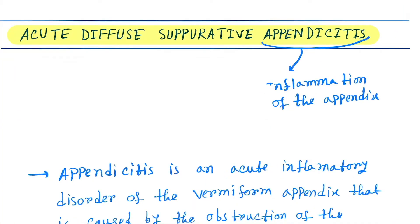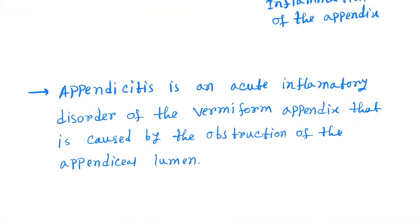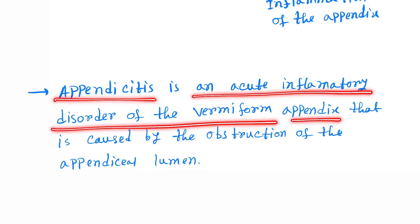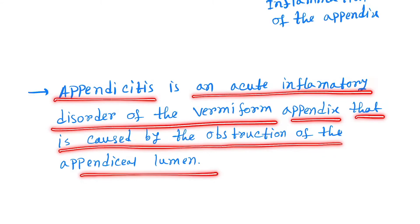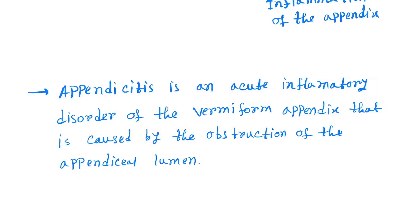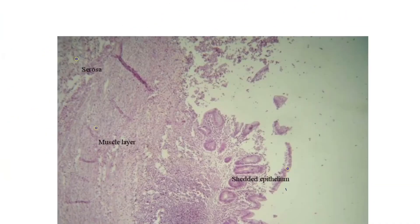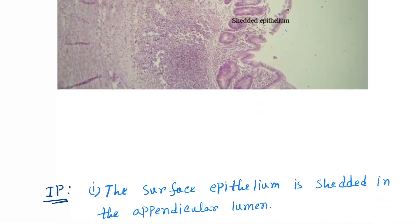Hello friends, today our topic is Acute Diffuse Suppurative Appendicitis. Appendicitis is the inflammation of the appendix — an acute inflammatory disorder of the vermiform appendix that is caused by obstruction of the appendiceal lumen. Let's see the histological features.